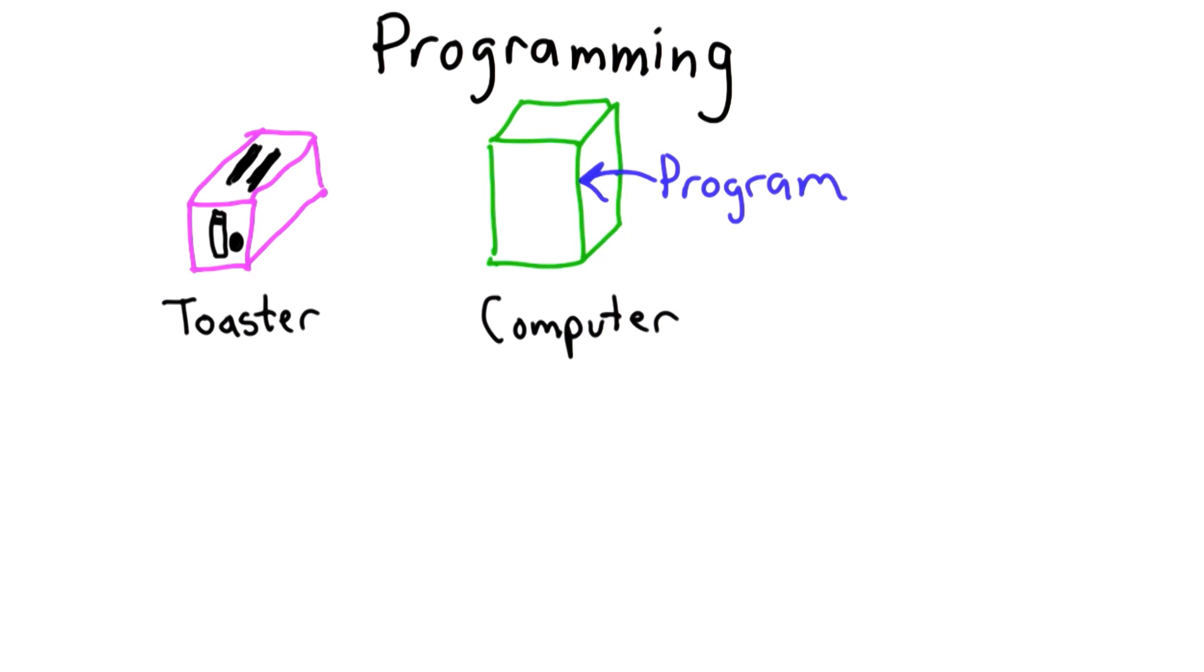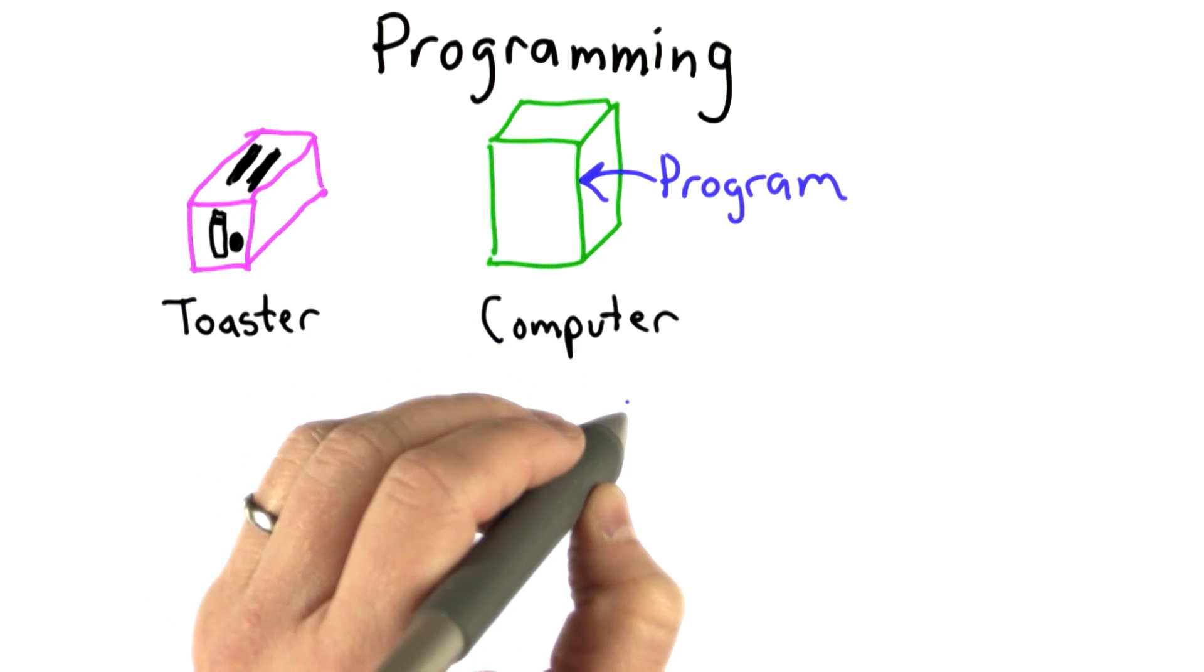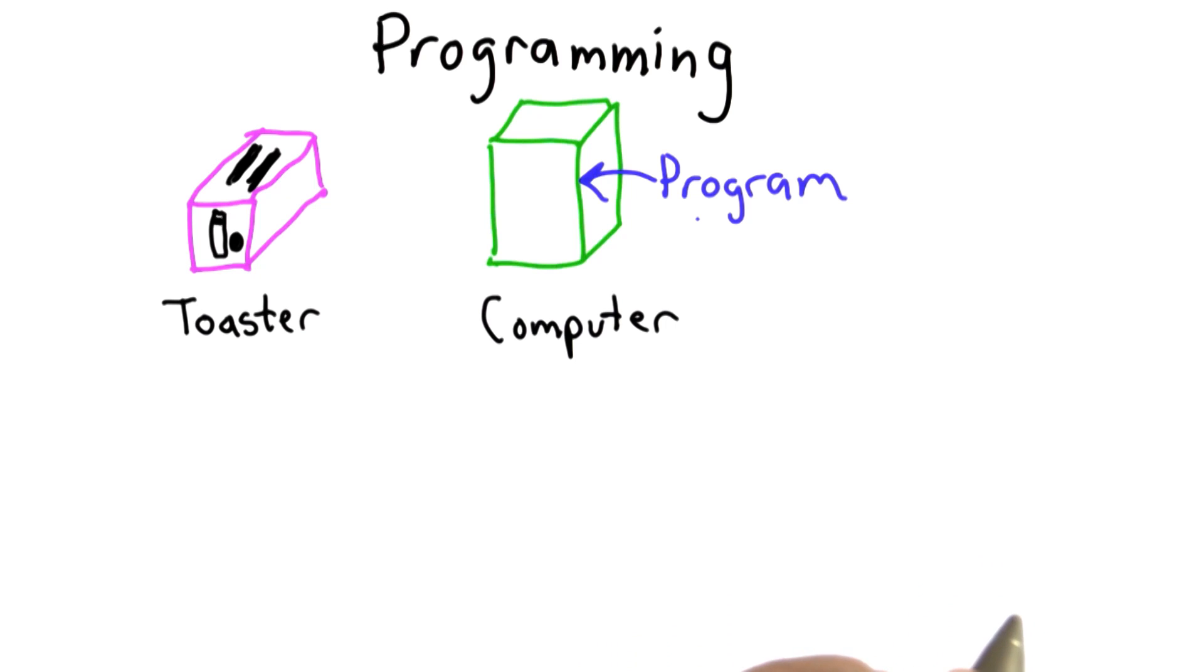The power of the computer is that it can execute those steps super fast. We can execute billions of instructions in one second. The program gives us a way to tell the computer what steps to take.